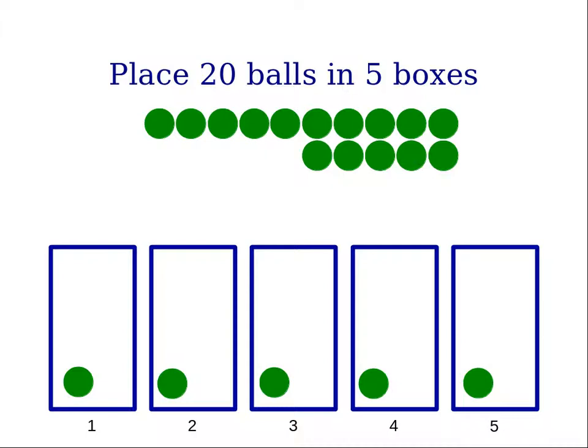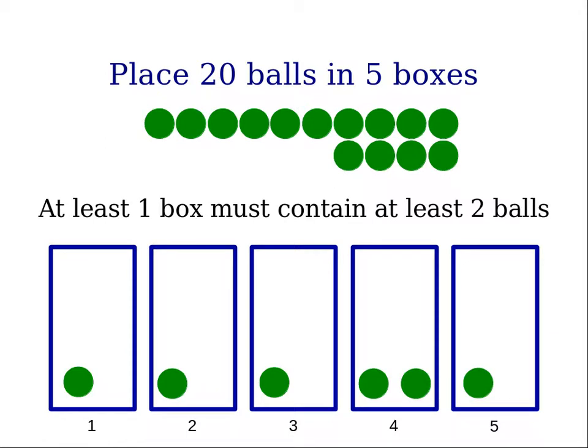Now the fourth box has a ball. Now we need to place the sixth ball in a box. So that means that at least one of the boxes must have more than one ball in it. And that's what the pigeonhole principle states.